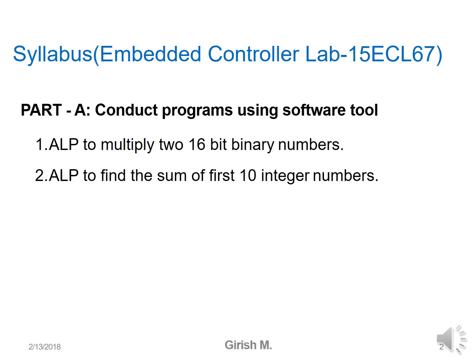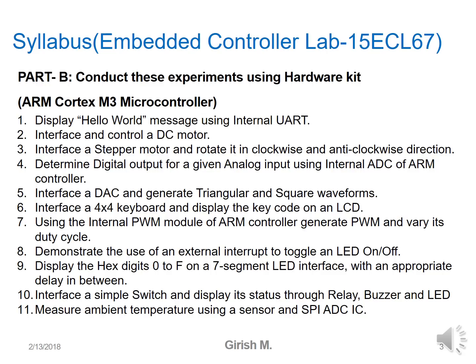Part A consists of only two programs to be conducted using the software tool Keil uVision4. The first program is to multiply two 16-bit binary numbers, and the second is to find the sum of the first ten integer numbers.